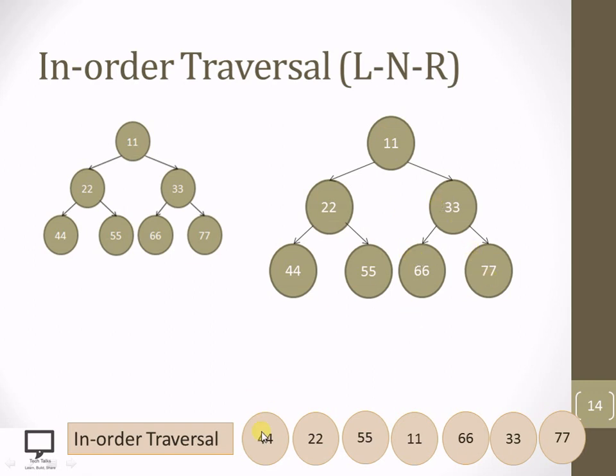The in-order traversal of this binary tree is 44, 22, 55, 11, 66, 33, and 77. In this way, our in-order traversal is done for the given example.